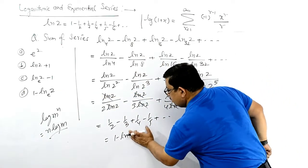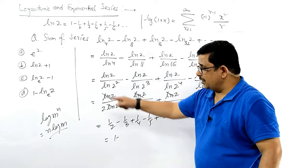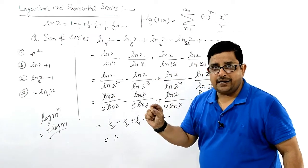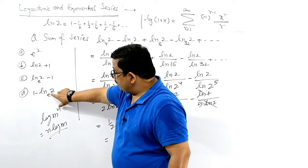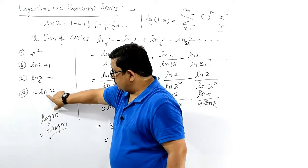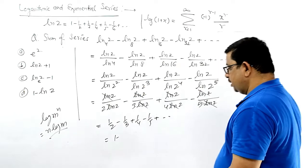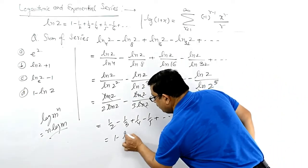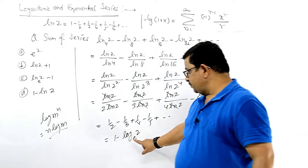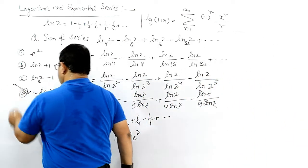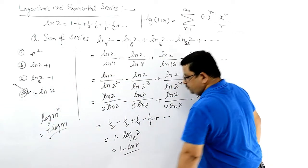यह option दे रहा है: log2, ln नहीं लिखते। वो गलत तरह से लिखा उसने — अगर ln लिखेगा तो e base लिखने की जरूरत नहीं होती है। Straight ln2 लिखे तो understood होता है कि इसमें base e चल रहा है। So this is 1 minus log2(base e) — यह ज़्यादा better है। यही इसका answer है, option D: 1 minus ln2।